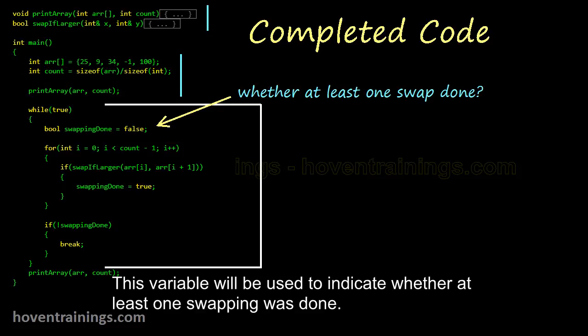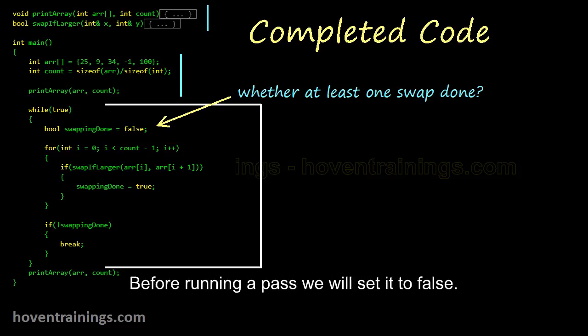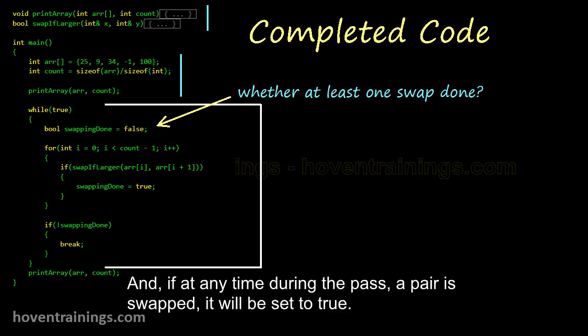This variable will be used to indicate whether at least one swapping was done. Before running a pass we will set it to false. And if at any time during the pass a pair is swapped, it will be set to true.